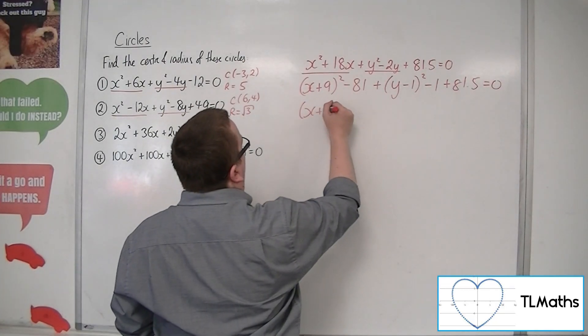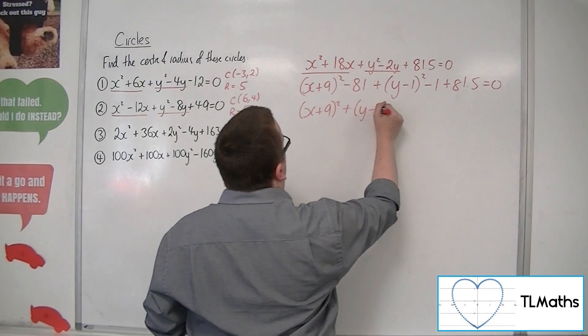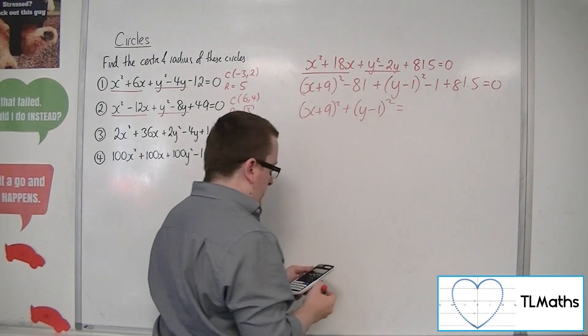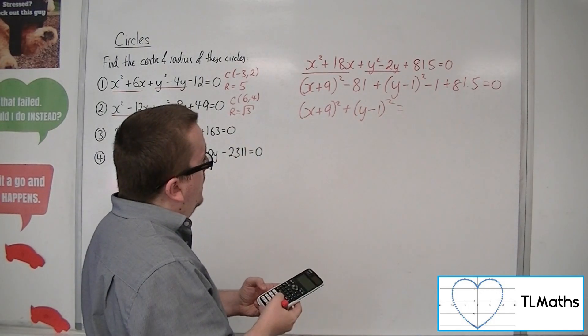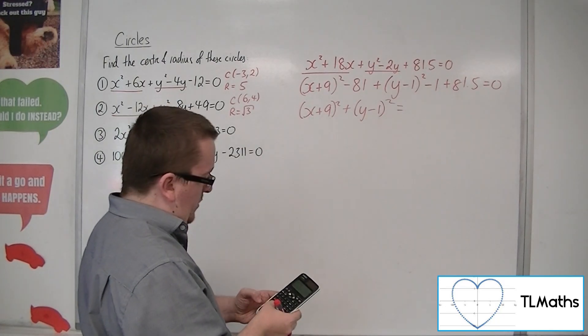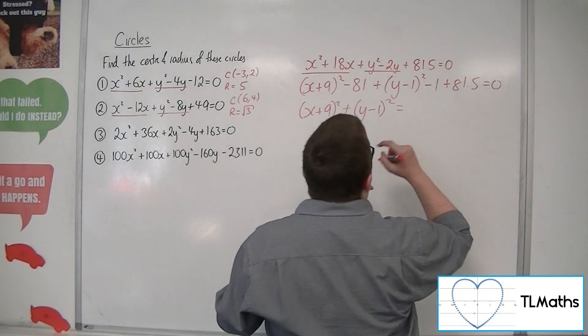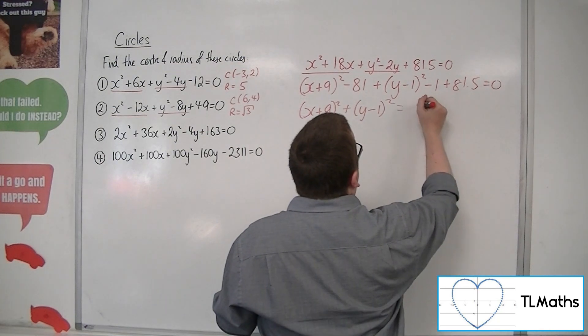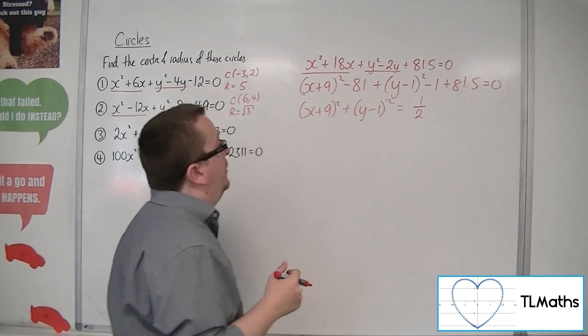So if I write x plus 9 squared plus y minus 1 squared first, I've got the minus 81, take away 1, plus 81.5. And that gets me minus half, add the half to both sides.